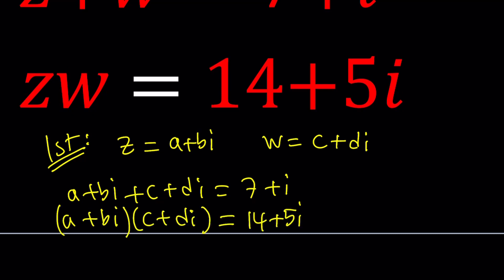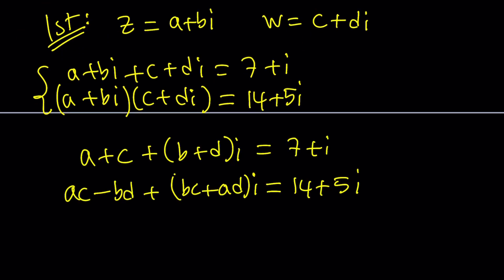And now we kind of got like a system of equations but let's go ahead and arrange the real parts and imaginary parts and that's going to give us a cleaner system. Notice that BI times DI is BDI squared and I replaced it with negative BD because I squared is negative 1.